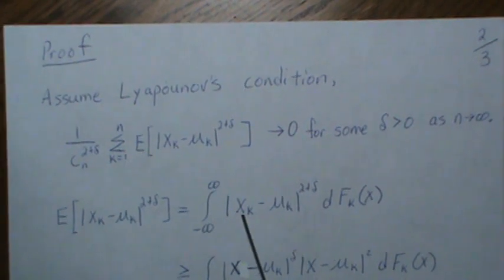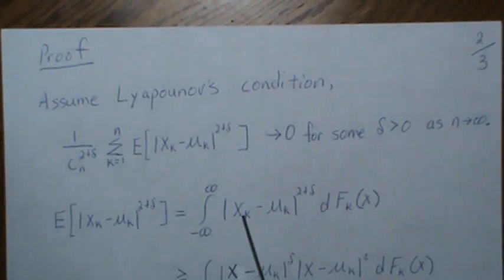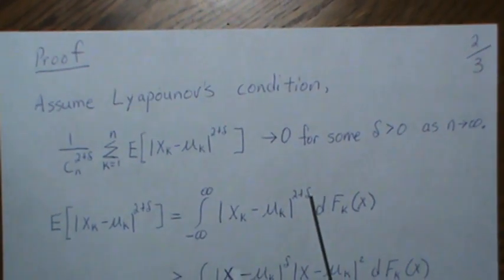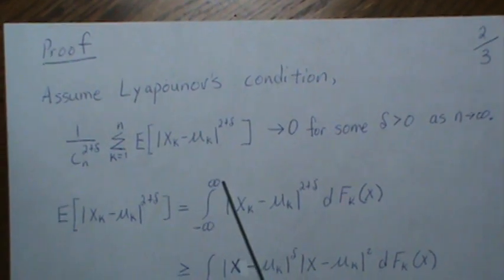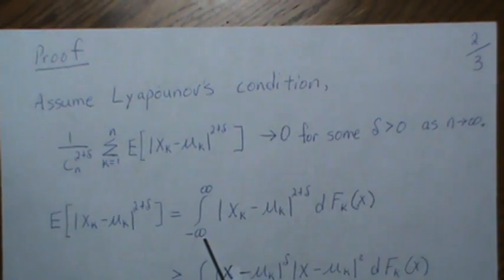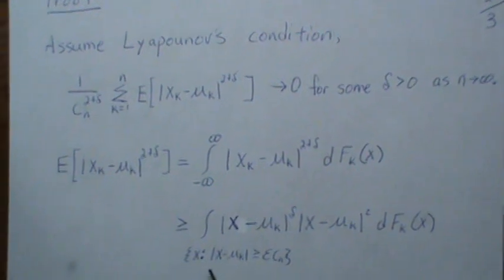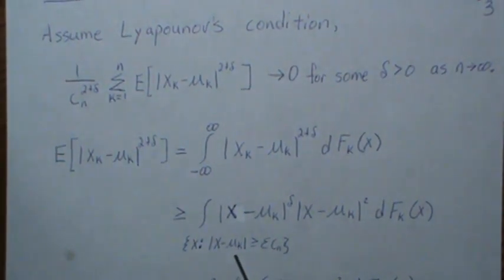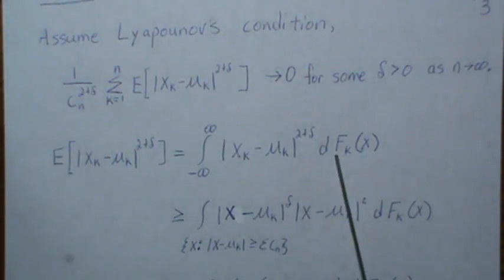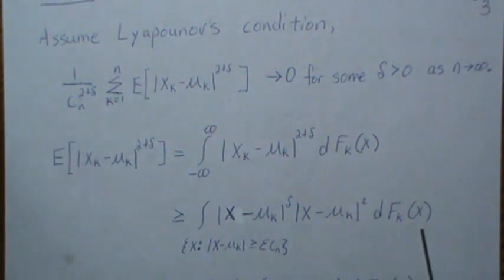The exponent can be broken up into this quantity squared plus this quantity raised to the delta. Then instead of integrating over the whole space, we're going to restrict where we integrate. So first we break this piece up—this is the Riemann-Stieltjes notation for integration.